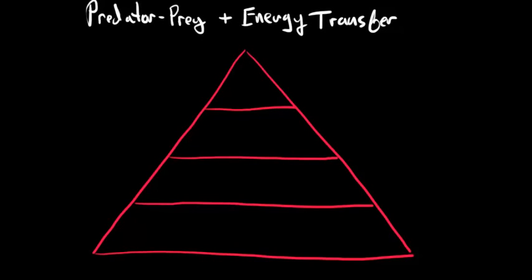Okay, predator-prey and energy transfer. Let's look at this here. This is sometimes called a trophic pyramid or energy pyramid, and it's called this because it shows the trophic levels. Trophic means energy, and each of these is a different level.